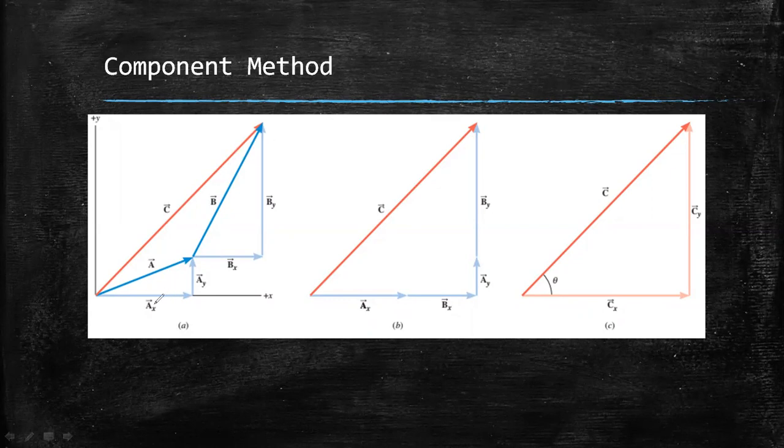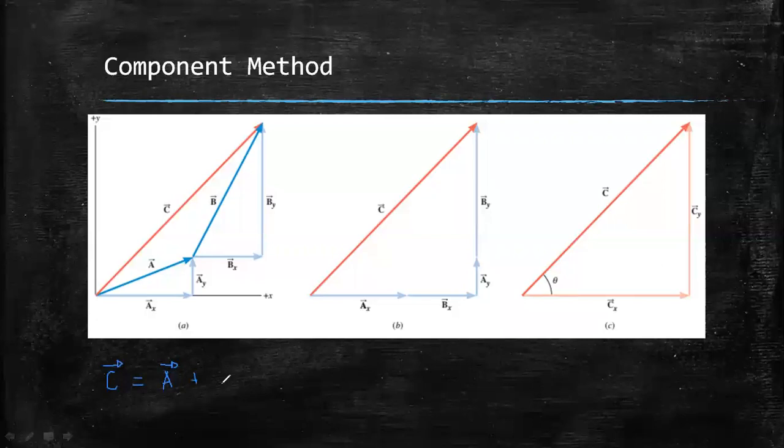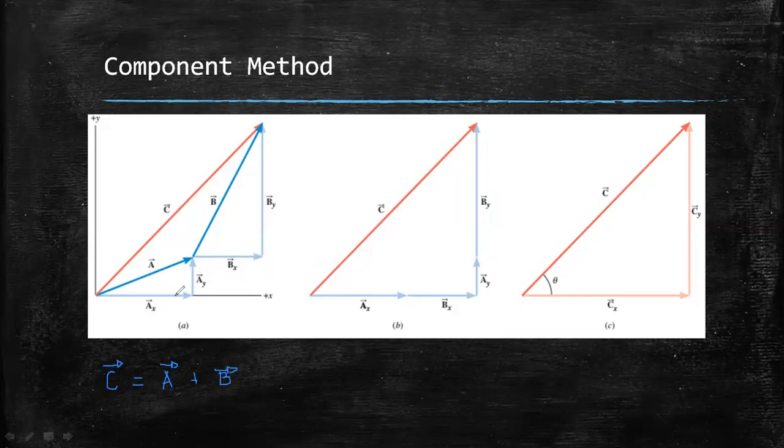As we can see in the figure, we have the problem where the resultant vector is equivalent to the sum of vector A and vector B. As we can see in the first figure, this is vector A, this is vector B, and the resultant is the red arrow, which is vector C.